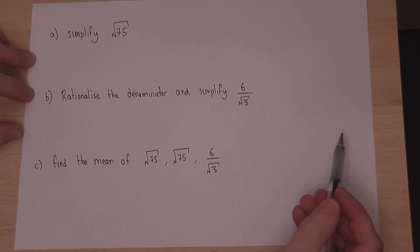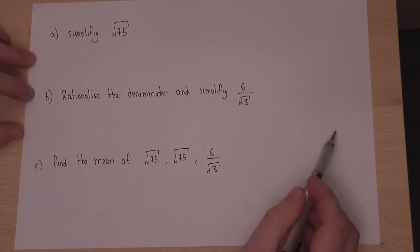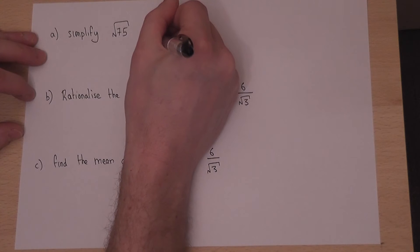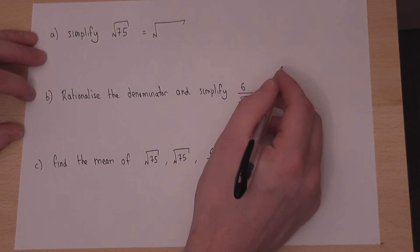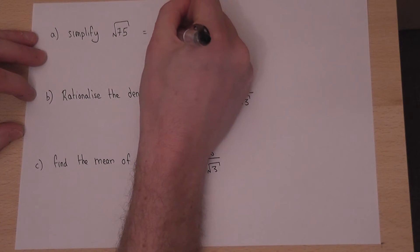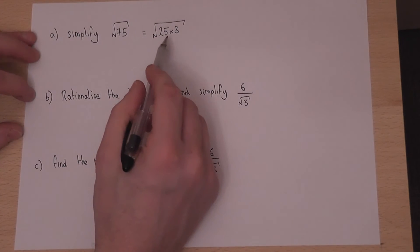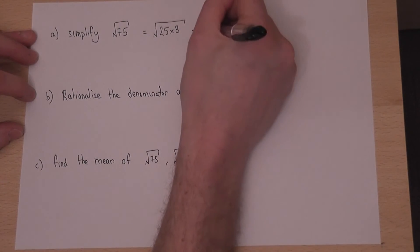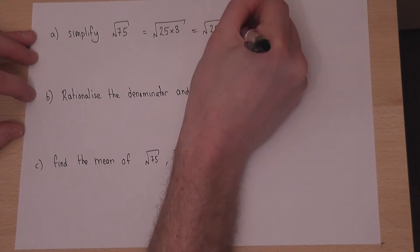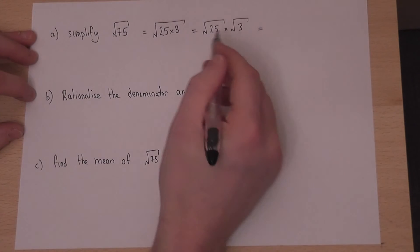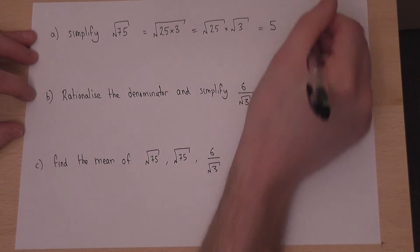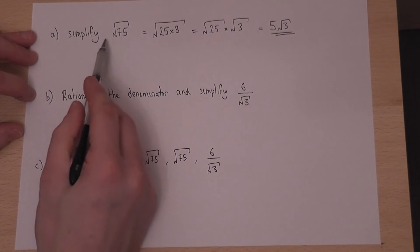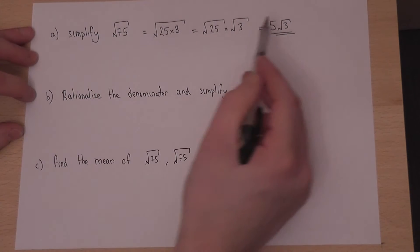This section covers a couple of key surd concepts. The first is to simplify a surd: we look for the highest square factor of 75, which is 25, so root 75 is root of 25 times 3. We split this into two separate square roots: root 25 is 5, so the answer is 5 root 3. The surd has been written in the form A root B.